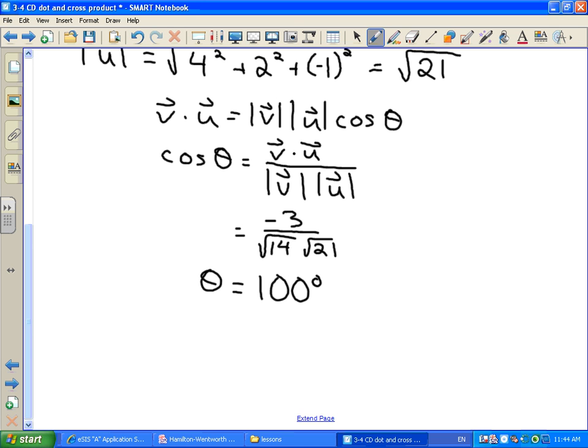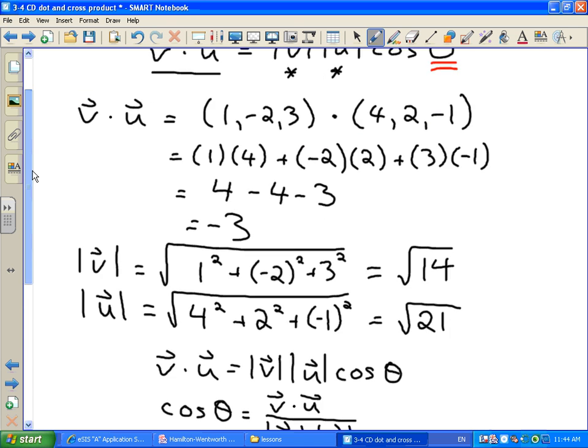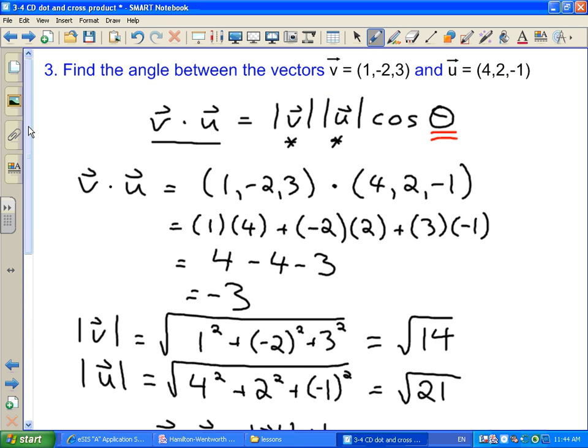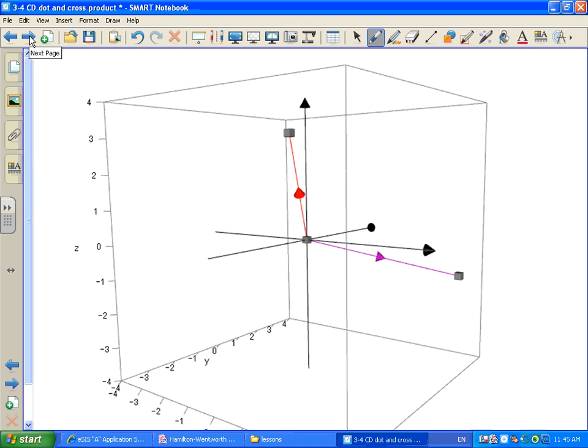So the neat thing I think about questions like this is, I would have a hard time visualizing these two vectors V and U because they're in three dimensions. But I can figure out what the angle is in between them just by doing the algebra and trusting that the algebra is going to give me the correct answer.